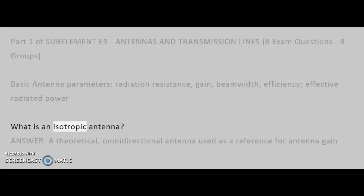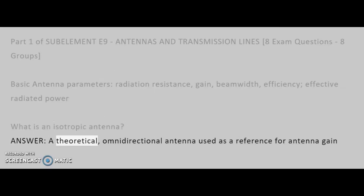What is an isotropic antenna? Answer: a theoretical, omnidirectional antenna used as a reference for antenna gain.